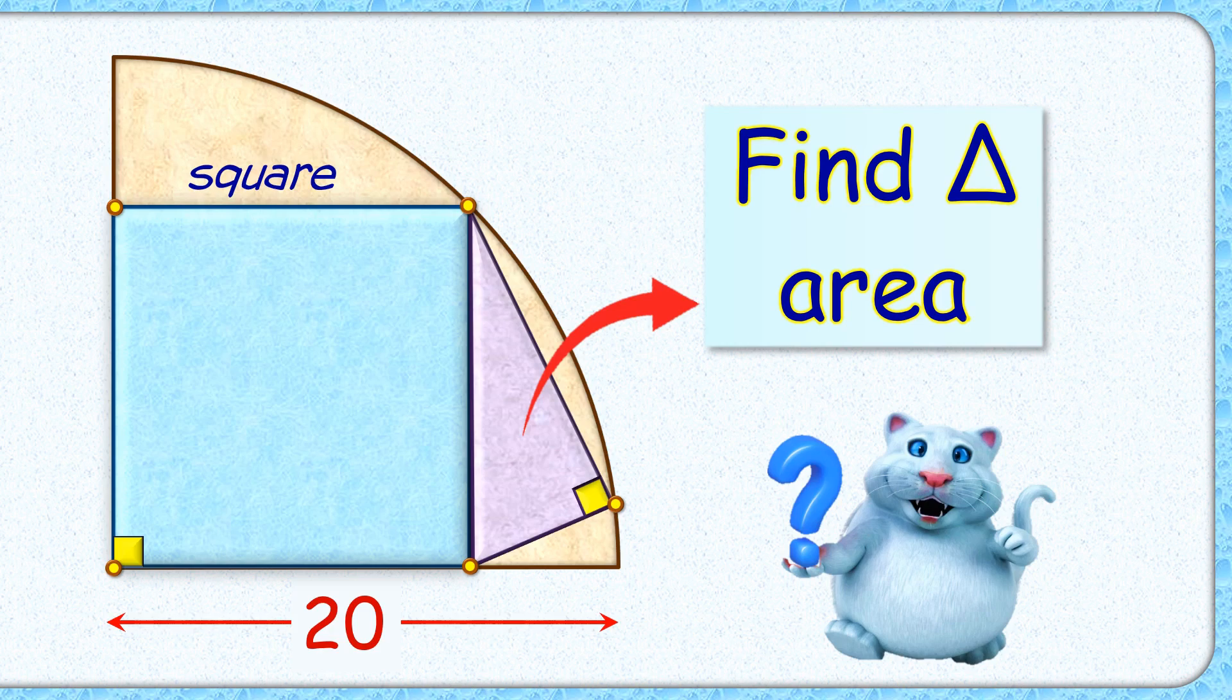Welcome everyone. In this interesting question, we have a quadrant with radius 20 centimeters, with a square inside it, one of its vertices lying on the circumference of the quadrant.